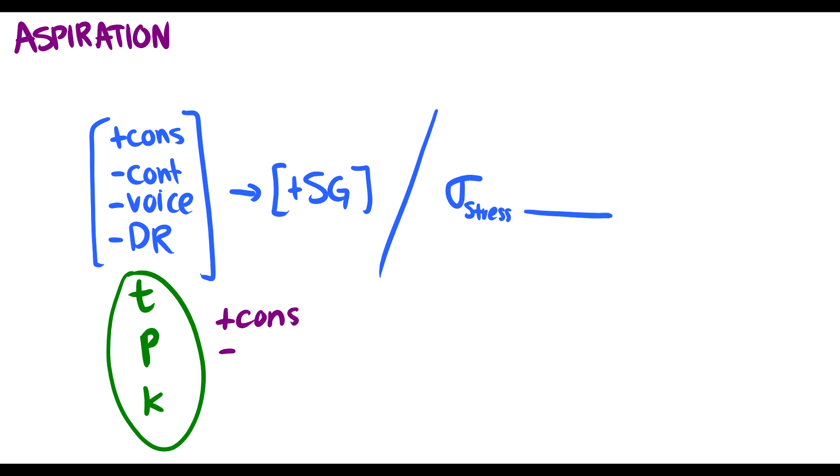So we have this thing here and we have this chart. So this chart, this thing, this chart of sounds, this feature matrix, and this feature matrix says plus consonant, minus continuant, minus voice, minus delayed release. These are the four features necessary to target T, P, and K. So you might be thinking, hold on a second. How did you come up with this? How did you come up with these four features? Well, first of all, these are the targets. So I look at this and I say, what features do I need? I need plus consonants for sure.